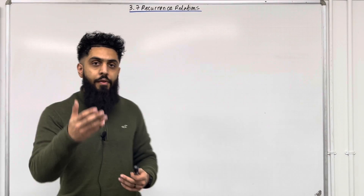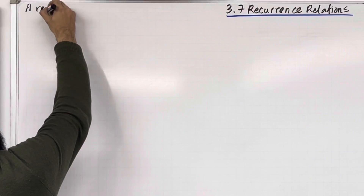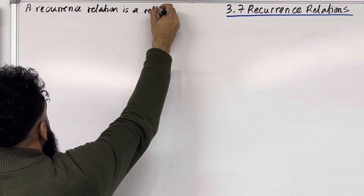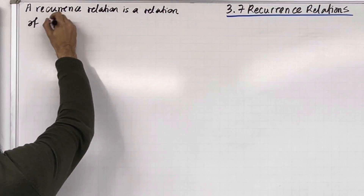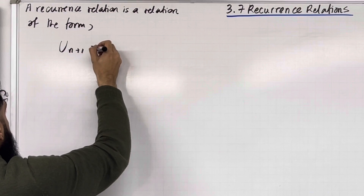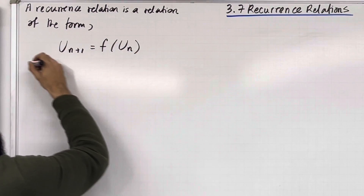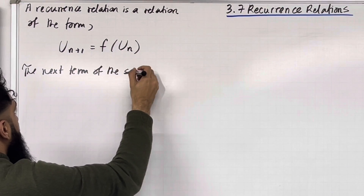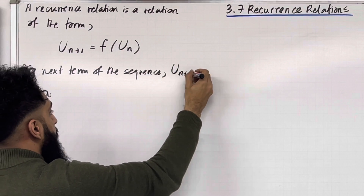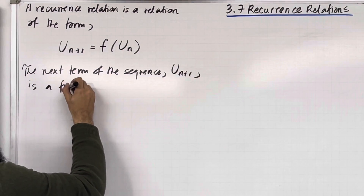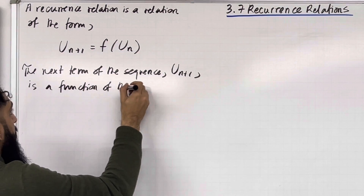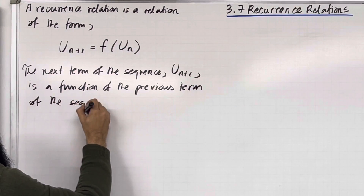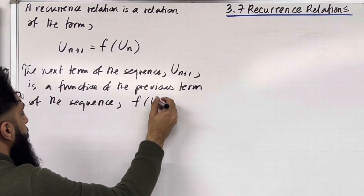Firstly, what is the definition of a recurrence relation? A recurrence relation is a relation of the form u_(n+1) = f(u_n). The next term of the sequence, denoted by u_(n+1), is a function of the previous term of the sequence, denoted by f(u_n).